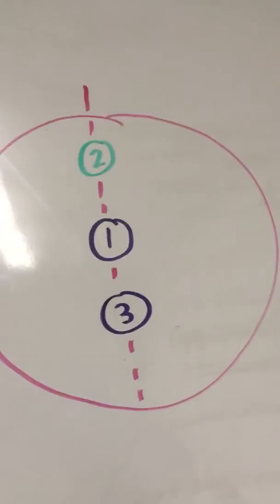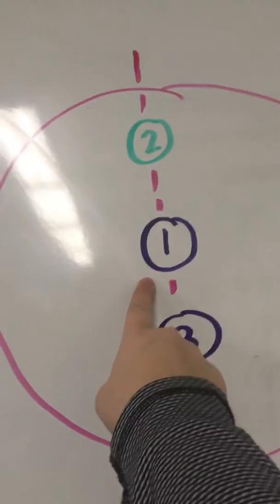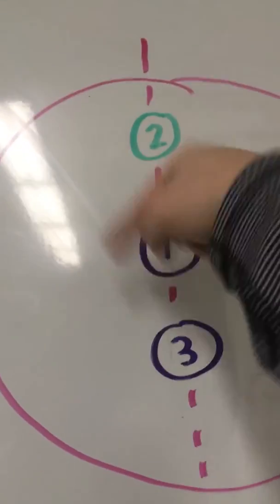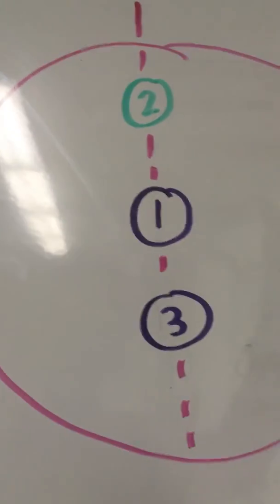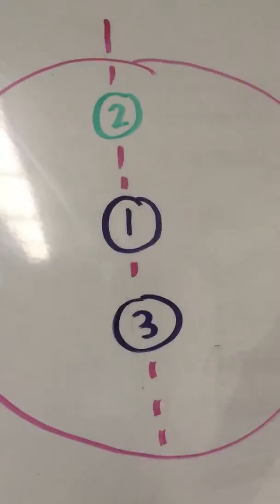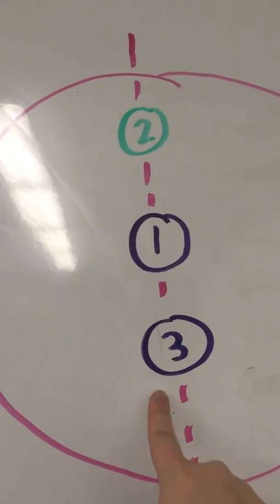So looking at this example, let's say I'm player number one. So I'd play it in the middle. Player number two then would put their penny somewhere random, let's say right here. As player number one, then I should play my penny drawing a line through the middle one opposite right here.